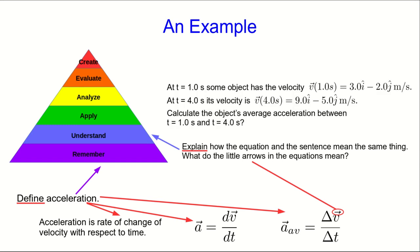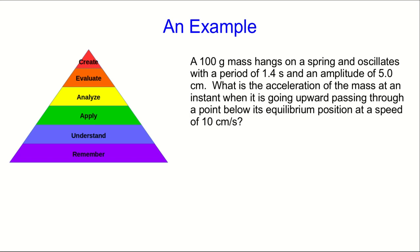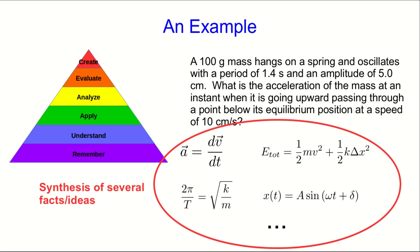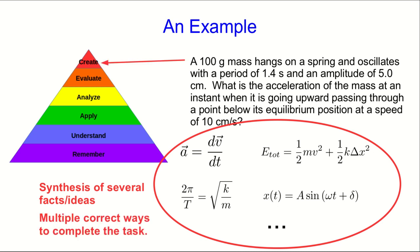Or I could give them some values and ask them to calculate the average acceleration. That might not look simple to you, but all they have to do if they understand the equation is take the values and plug them in. So this is a straightforward application of the equation. Finally, skipping a few levels in the taxonomy, I might give a question like this. This is quite complex — they would use the definition of acceleration somewhere in the solution, but it would also involve a number of other ideas. Those could be put together in many ways, and there are many possible solutions that would all arrive at the correct answer. This involves synthesis of several facts or ideas, and there are multiple correct ways to complete the task. Those are all characteristic of something at the create level in Bloom's Taxonomy.